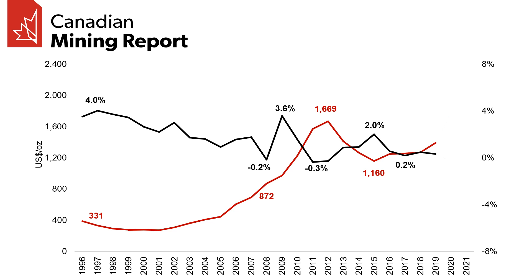Overall, what we see from this is that real yields do seem to be inversely correlated with the gold price. If the Fed hikes rates but inflation stays high, real bond yields could still remain heavily negative, and this would likely support a strong gold price as the opportunity cost to hold it instead of bonds is actually quite low.